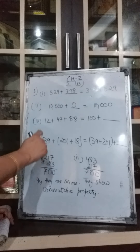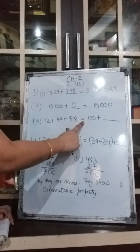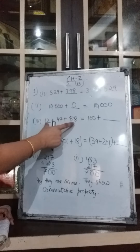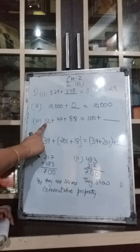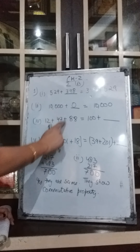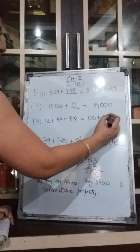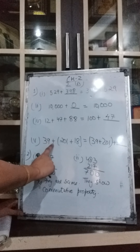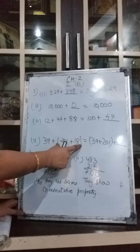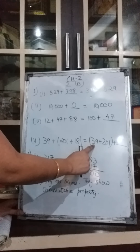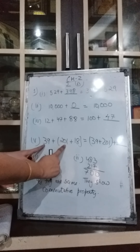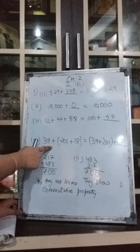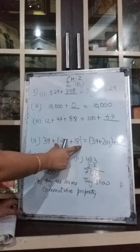The fourth part: 12 plus 47 plus 88 should equal 100 plus blank. Now 88 plus 12 gives 100, so those two are accounted for. The remaining digit is 47, so we write 47 here. The fifth part: 39 plus (201 plus 18) should equal 39 plus (201 plus blank). The bracket position changes; 18 is left, so 18 goes here. This is associative property, where the position of the bracket changes.